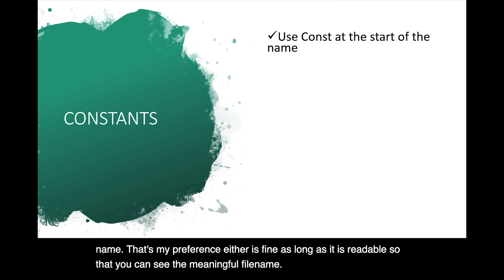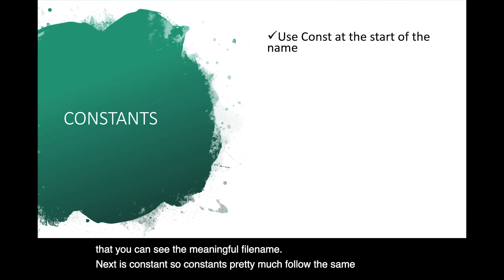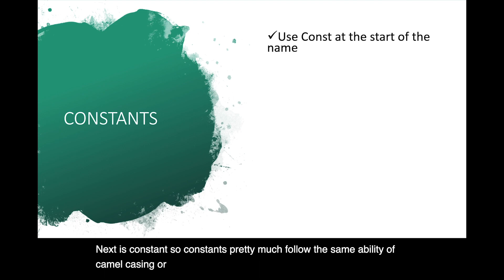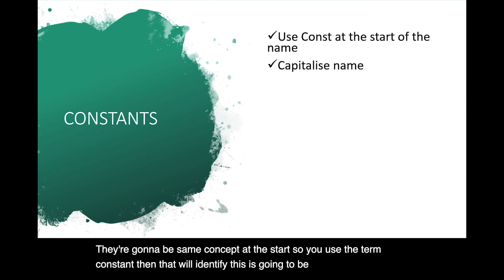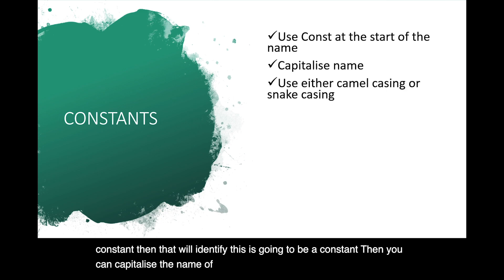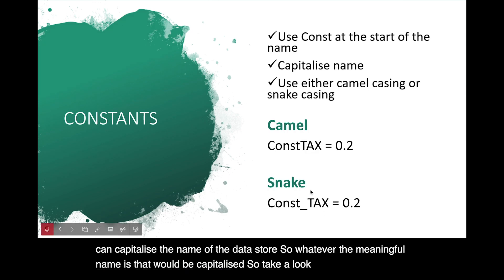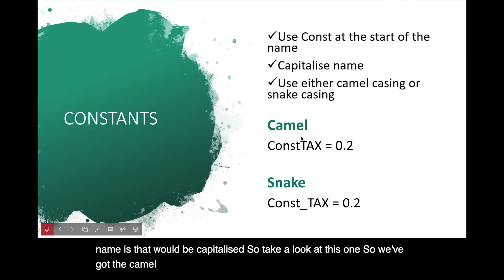Next is constants. So constants pretty much follow the same ability of camel casing or snake casing, but they're going to be saying const at the start. So you use the term const, and then that will identify this is going to be a constant. Then you can capitalize the name of the data store. So whatever the meaningful name is, that would be capitalized. So take a look at this one. So we've got the camel casing, so it's going to say const, and then tax in capitals. Const underscore tax in capitals.